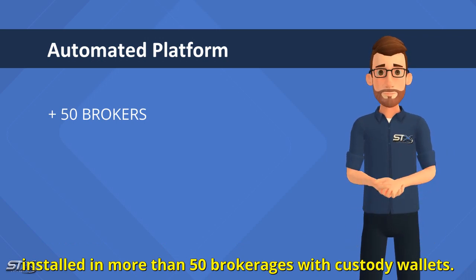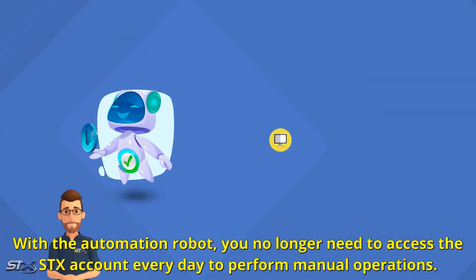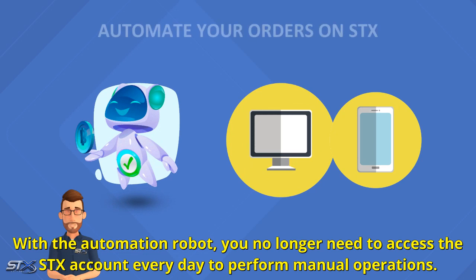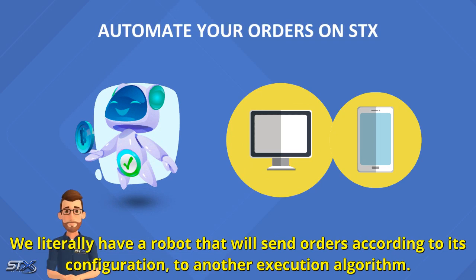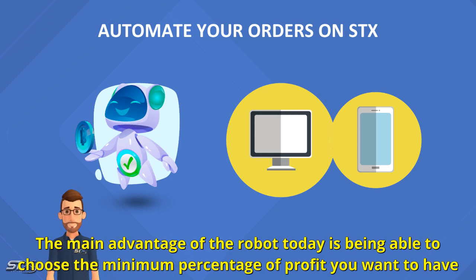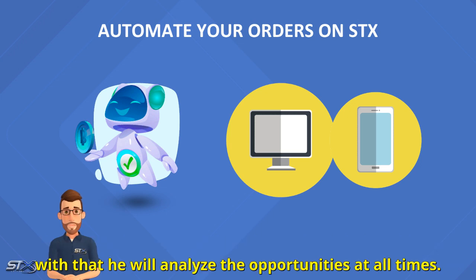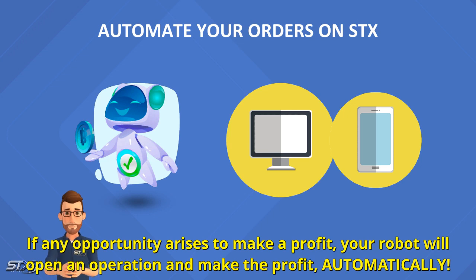With the automation robot, you no longer need to access the STX account every day to perform manual operations. We literally have a robot that will send orders according to its configuration to another execution algorithm. The main advantage of the robot is being able to choose the minimum percentage of profit you want. It will analyze opportunities at all times, and if any opportunity arises, your robot will open an operation and make the profit automatically.